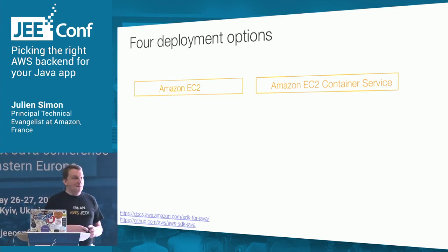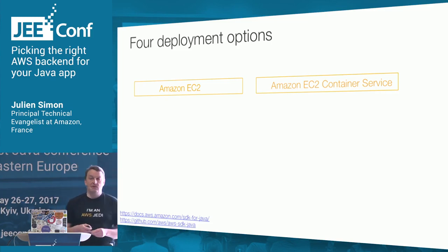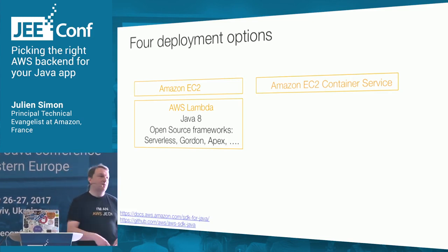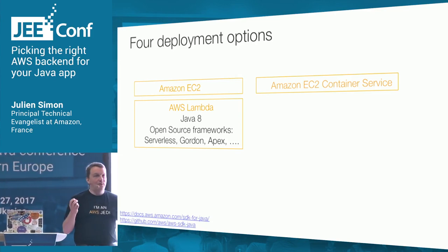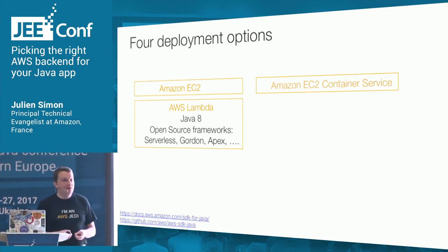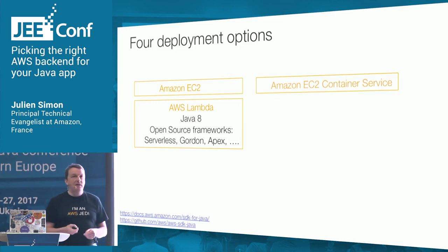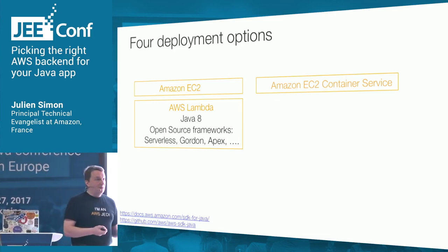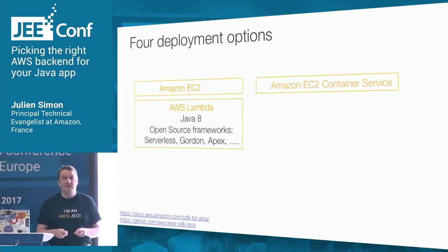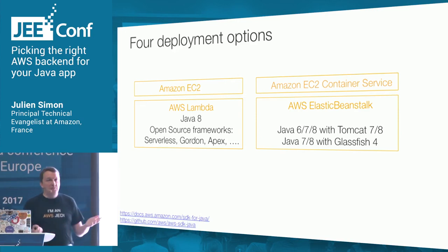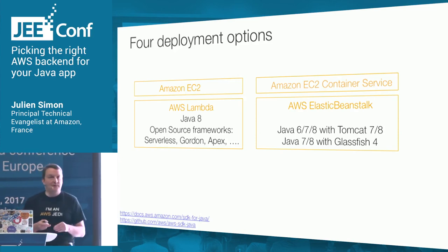We have four deployment options when it comes to deploying code on AWS. The first and oldest is deploying with virtual machines on Amazon EC2 — just fire up a server and SSH to it. The second is Docker containers using Amazon ECS, which allows you to manage Docker clusters and schedule containers on those clusters.